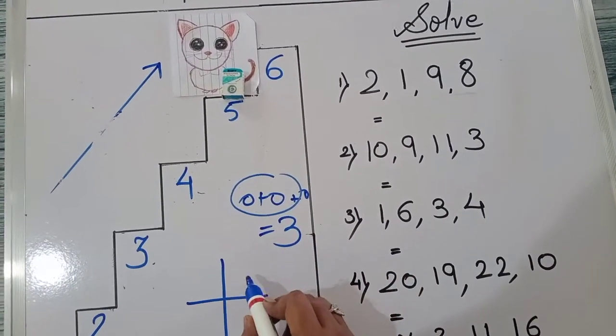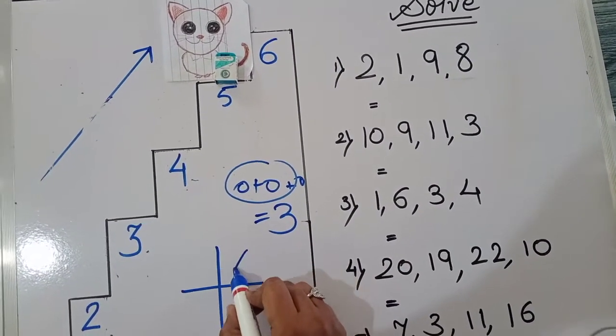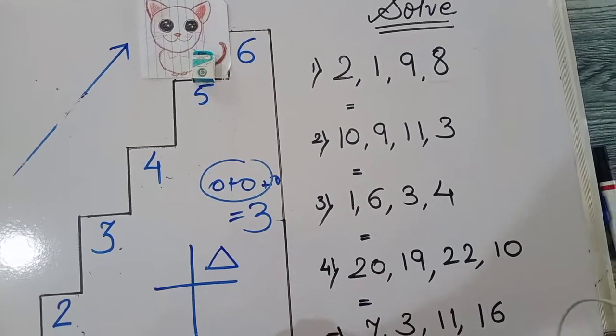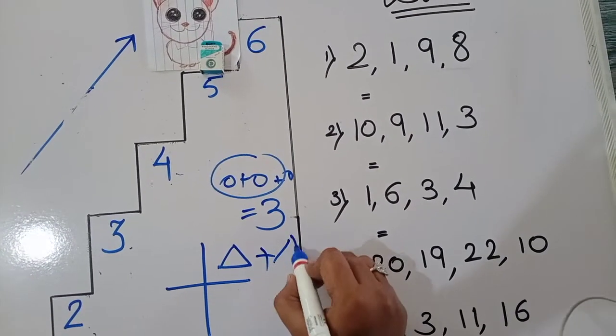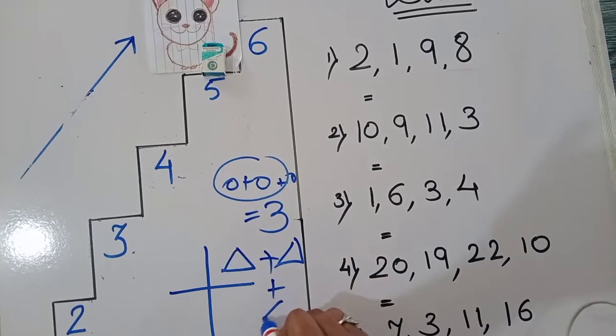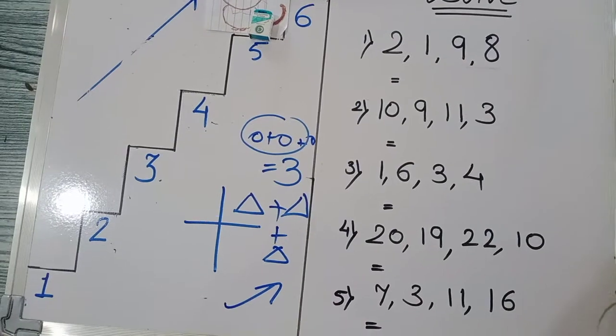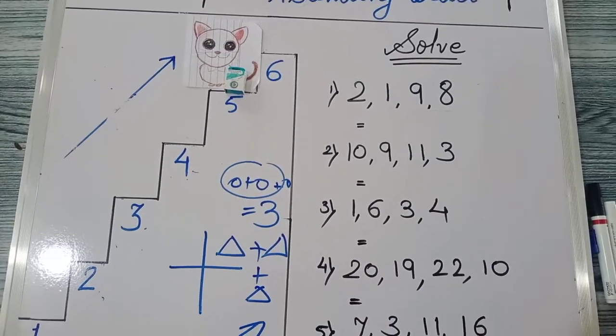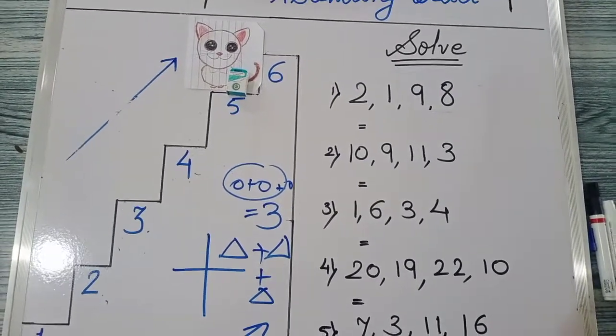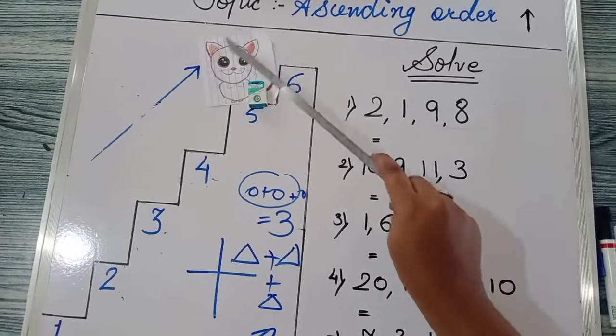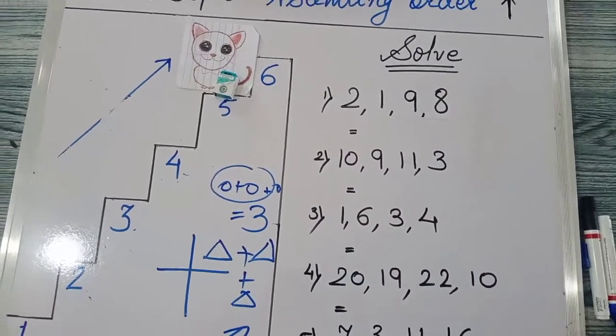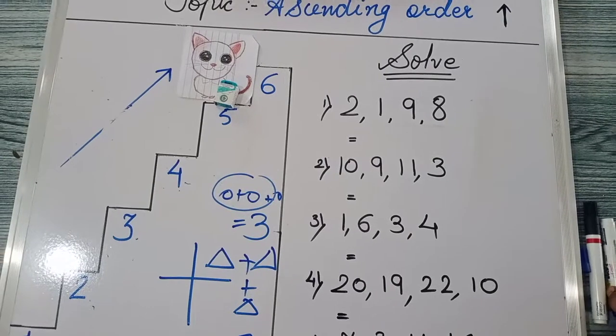Suppose, I have one triangle. After that, I have drawn again one triangle. Again one triangle, as we goes on increasing the triangles, the number goes on increasing. So, the cat, it gains on 5th step. So, this is ascending order.